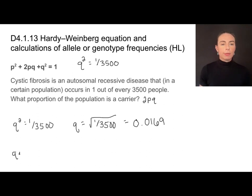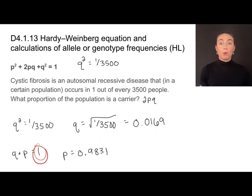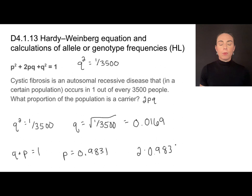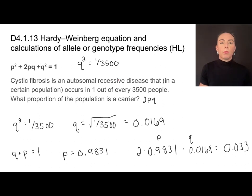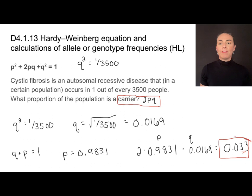Since q plus p must equal 1, and q is 0.0169, p must be 0.9831. To find the carrier frequency 2pq, we calculate 2 × 0.9831 × 0.0169, which gives approximately 0.033. So the proportion that is a carrier is 0.033 — about 33 out of every 1,000 people in this population.